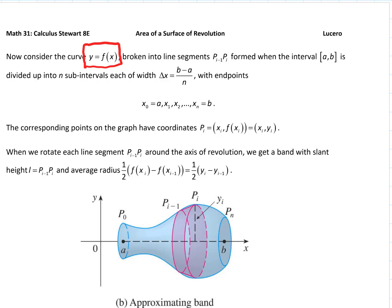We're going to take y equals f of x and break it up into little line segments, just like we did when we calculated arc length — points p sub i minus 1 and p sub i on the interval from a to b, divided into n subintervals, where delta x equals (b minus a) / n. When we rotate that around, we get a band with a slant height l equal to the line segment from p sub i minus 1 to p sub i, and r equals the average radii.